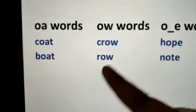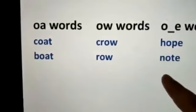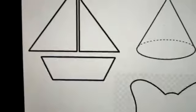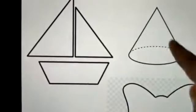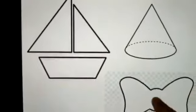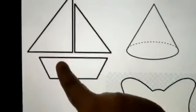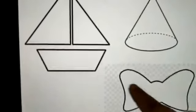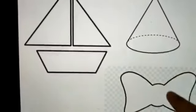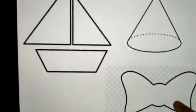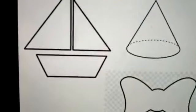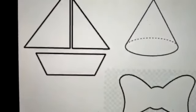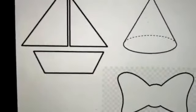Can you think of more words? Now you are going to trace these three objects for me: a boat, a cone, and a bow. And you will write the related long O words in them. Let's see who can do it. Happy learning!